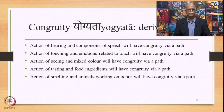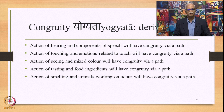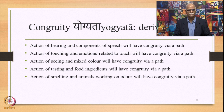Similarly, the action of seeing and mixed colour will also have some congruity, but via a path through the simple Arthakasha. The action of tasting and food ingredients will have congruity, but via a certain path through the simple Arthakasha. This is how the derivative Arthakasha is said to possess Yogyata with respect to the sense organ and its domain.